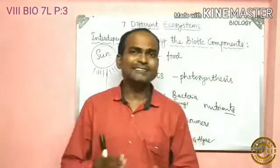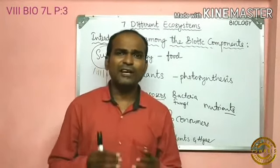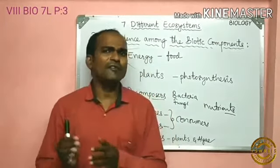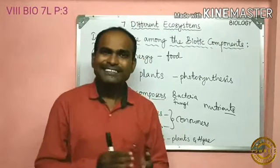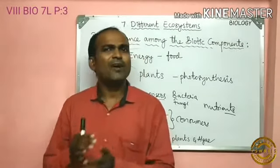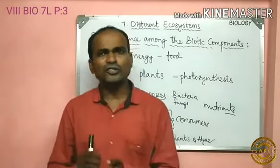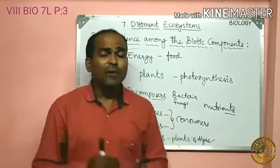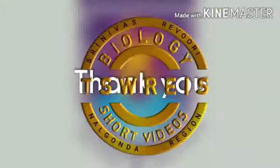Let's recall what we learned: the main source of energy is sunlight for all living organisms. This energy is transmitted from one organism to another through food chains. Tomorrow we are going to see what are the changes in the ecosystem. Dear children, take your homework: how are organisms linked by their feeding relationships to make a food web? Thank you very much.